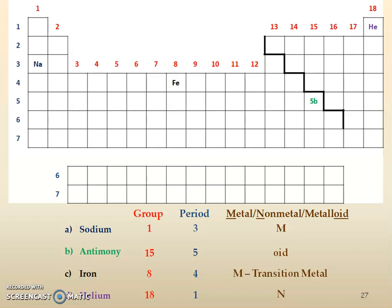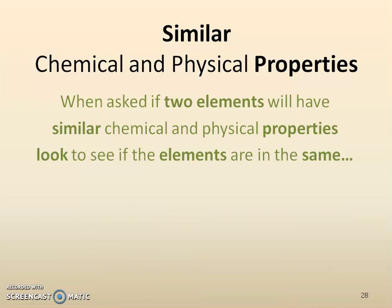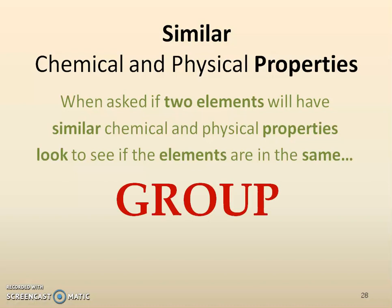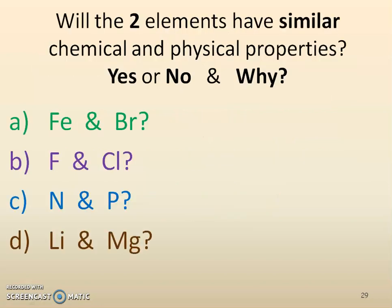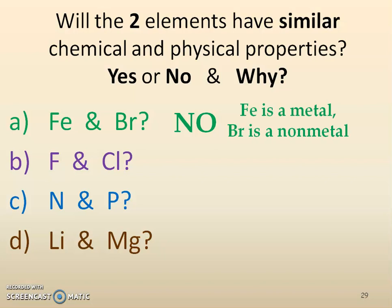We also want to remember that if you're asked whether two elements would have similar chemical or physical properties, you would check if those elements are in the same group. If they're in the same group, they're going to have very similar properties. Let's look at practice: iron and bromine. They are not in the same group, and iron is a metal while bromine is a non-metal, so they will definitely have different properties.